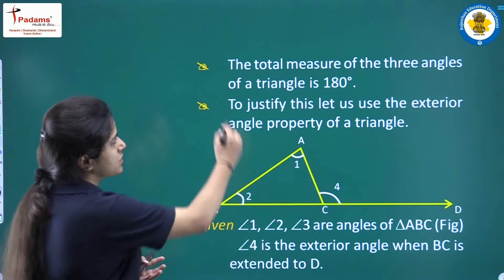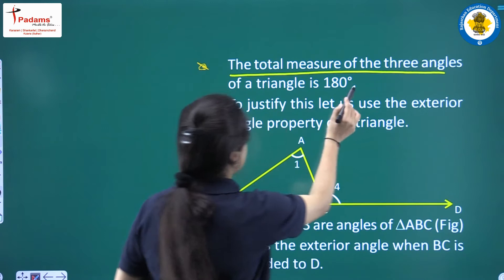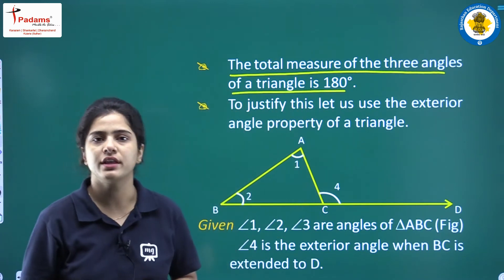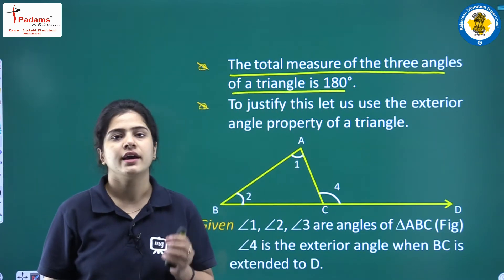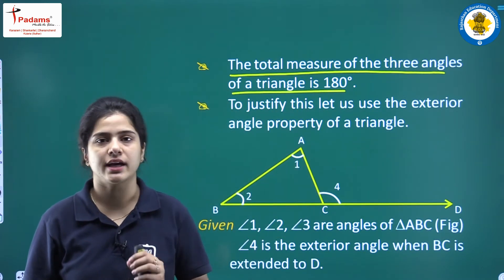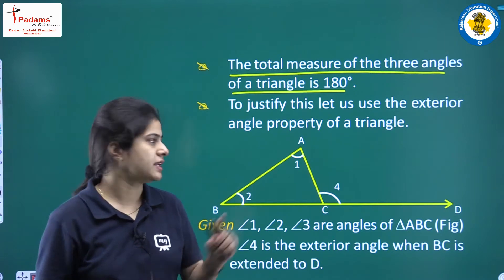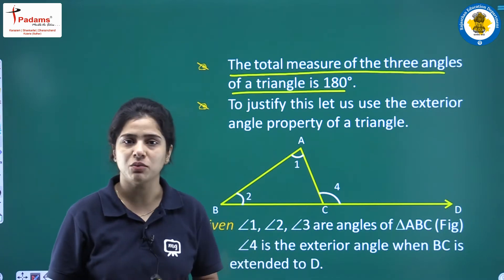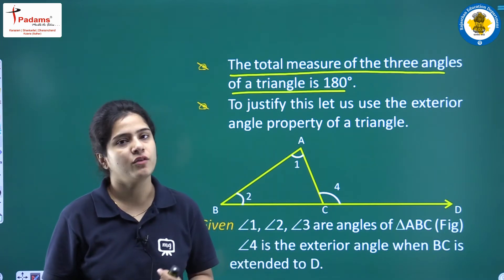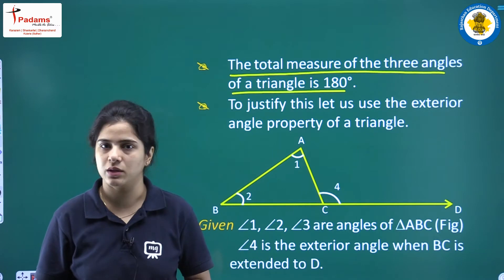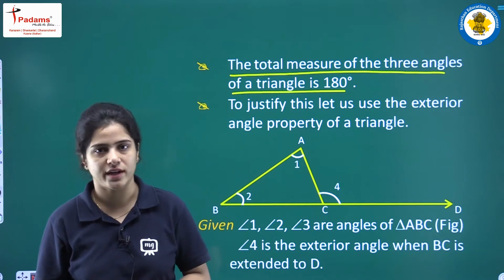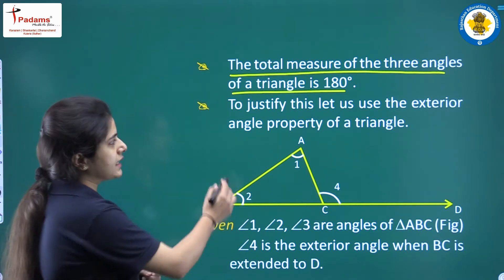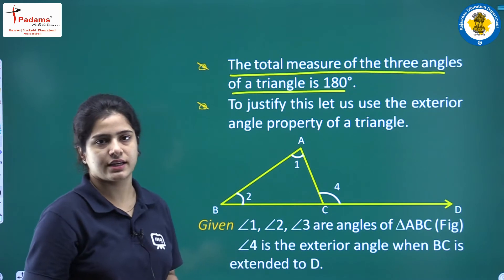The total measure of the three angles of a triangle is 180 degrees. This means that the three angles of a triangle are equal to 180 degrees. Now let's see how we can justify this.